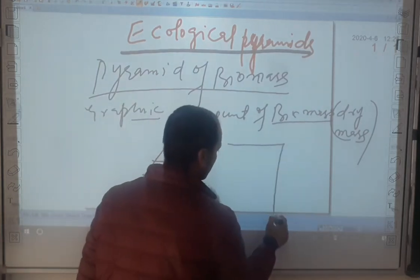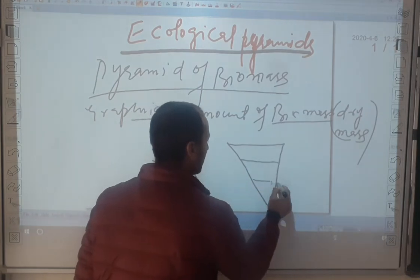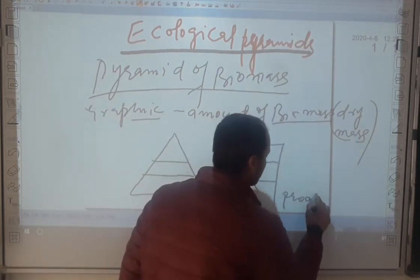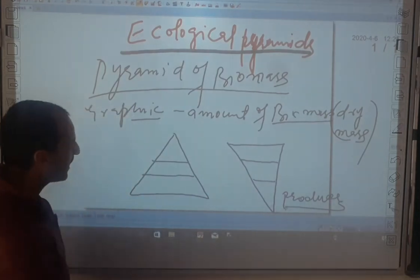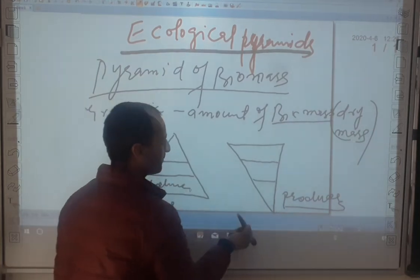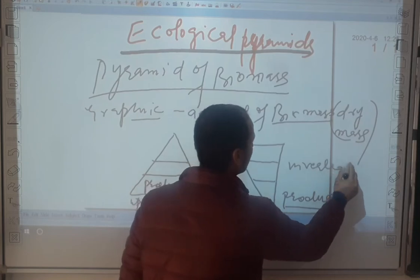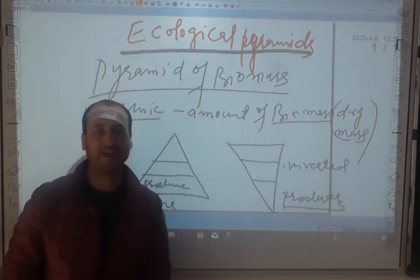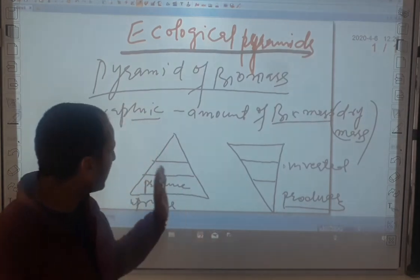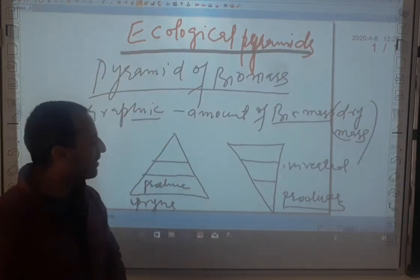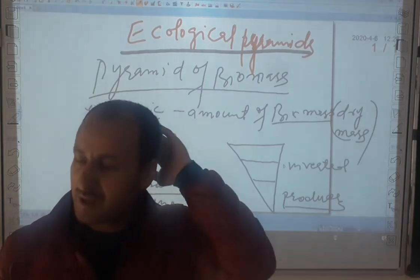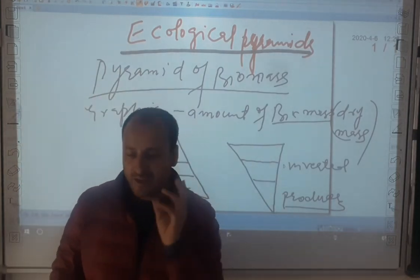The pyramid of biomass can either be a straight pyramid or it can be inverted. As we said in previous lectures, always remember: the base always represents the producer, whether it is an inverted pyramid or an upright pyramid. The base always has producers. In the case of pyramid of biomass, we may have a straight or upright pyramid, or we may have an inverted pyramid.